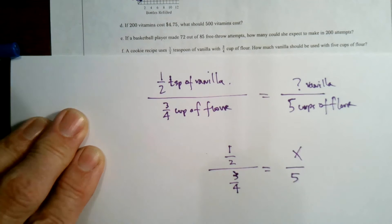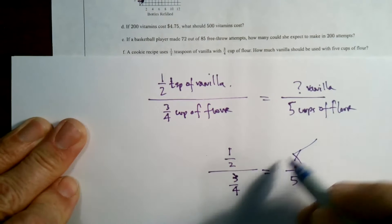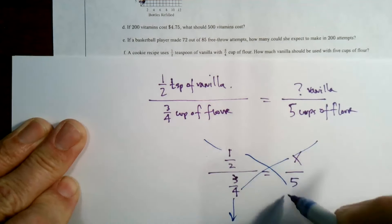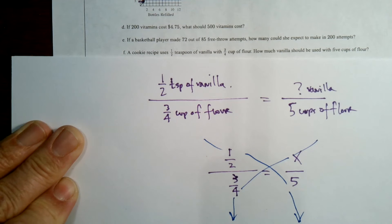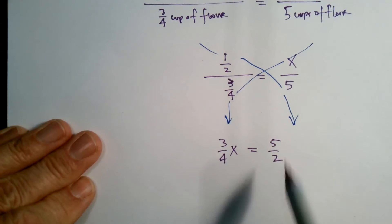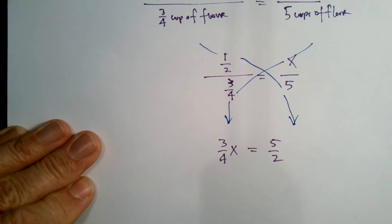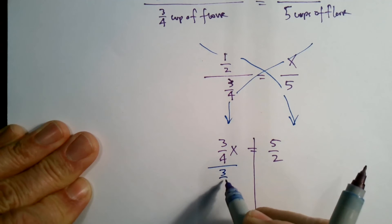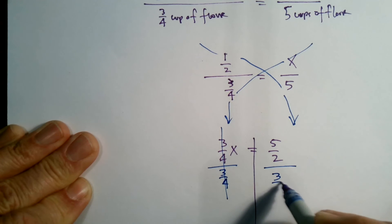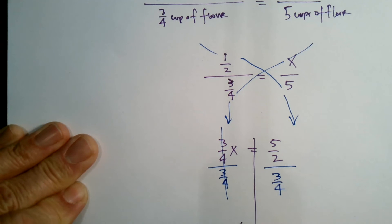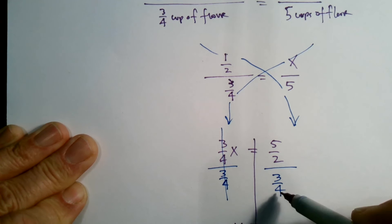The proportion is: one half over three fourths equals X over five. I'll use cross multiplication to solve. That gives me three fourths X equals one half times five, which is five halves. To solve for X, I divide both sides by three fourths.